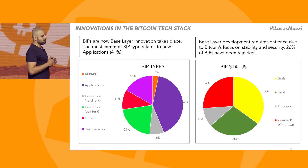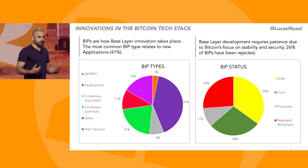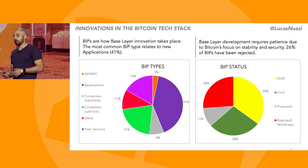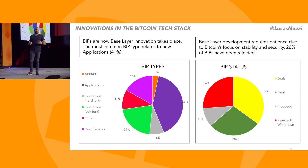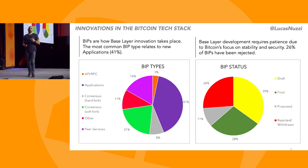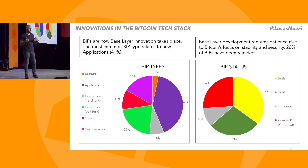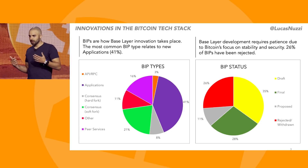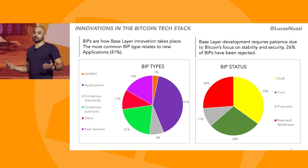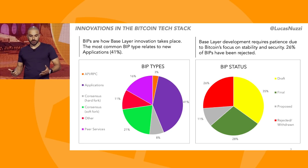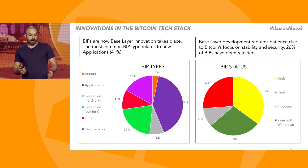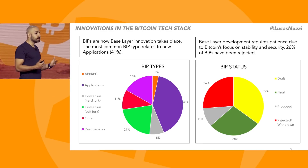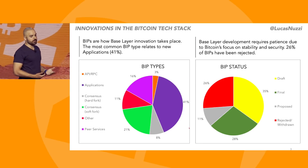There's been really interesting work around standardizing how new proposals get added to Bitcoin. This is important because Bitcoin prioritizes security, censorship resistance, stability, and uptime — it has the best uptime of any distributed system in human history for that reason. And here you have the taxonomy that Bitcoin Core has created to contextualize base layer innovation.